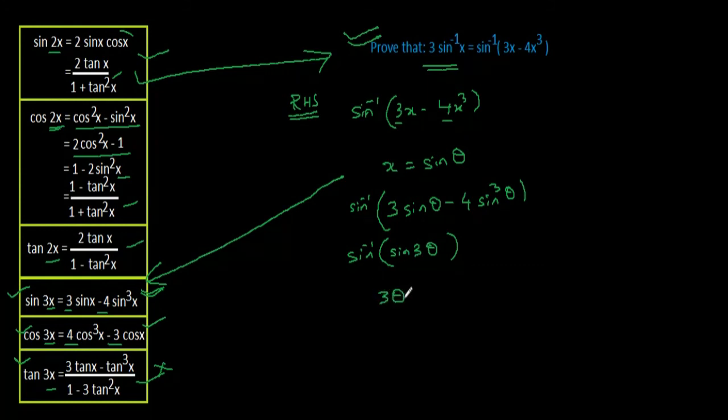So here, if we apply sine inverse on both sides, I will get sin⁻¹(x) = sin⁻¹(sin θ). We know sin⁻¹(sin θ) becomes just θ, so we're left with only θ.